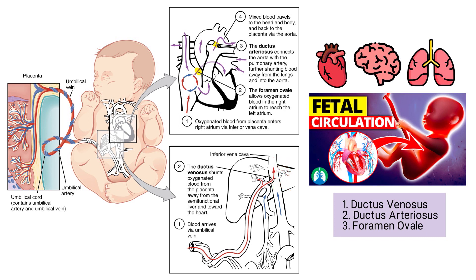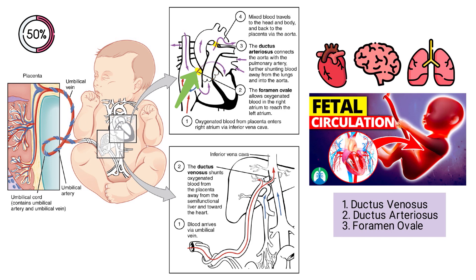This blood in the inferior vena cava is well oxygenated, but it mixes with venous blood returning from the lower extremities. Entering the right atrium, around 50% of this mixed blood is shunted from the right atrium into the left atrium through the foramen ovale, which is a small opening in the intra-atrial septum.